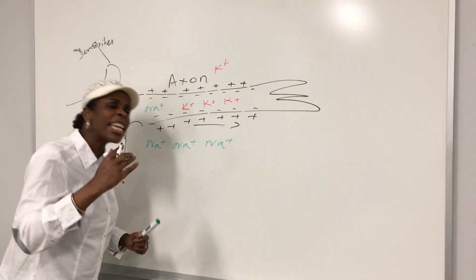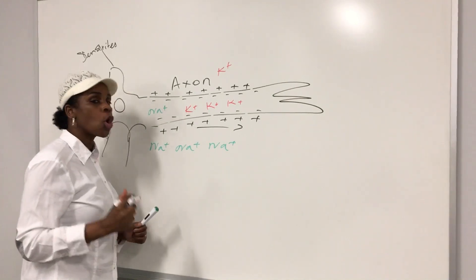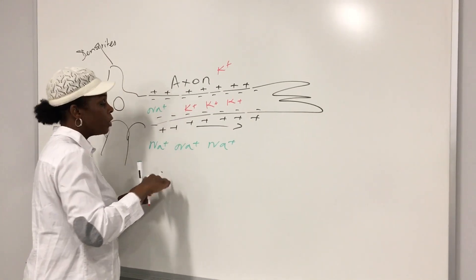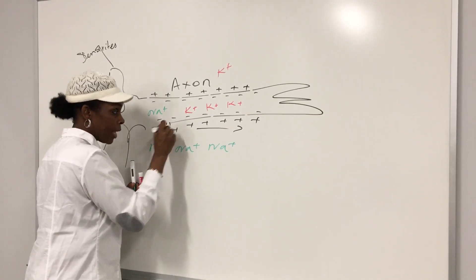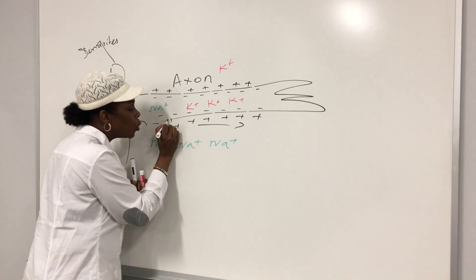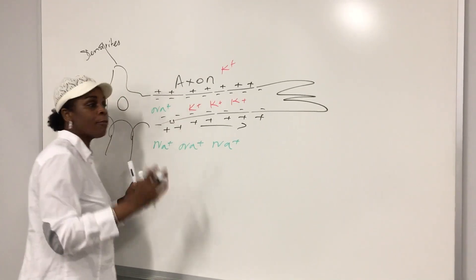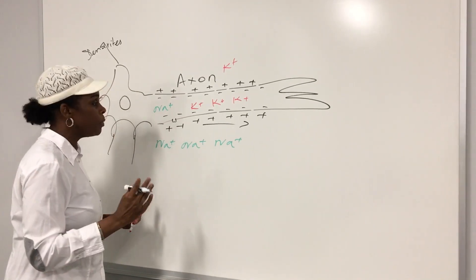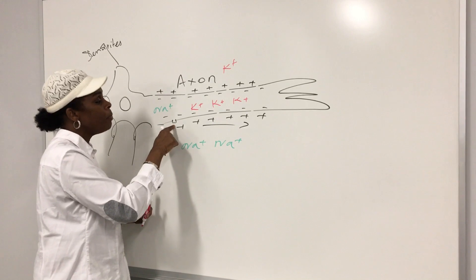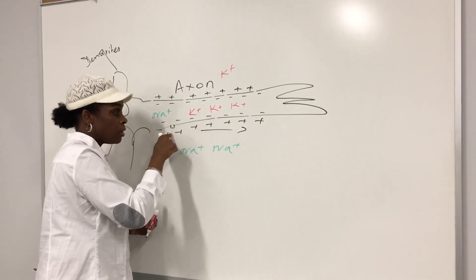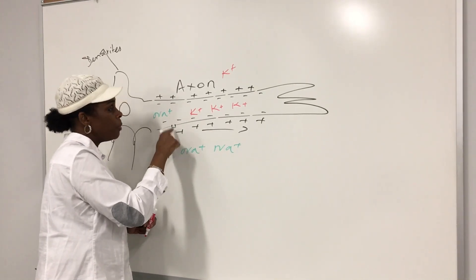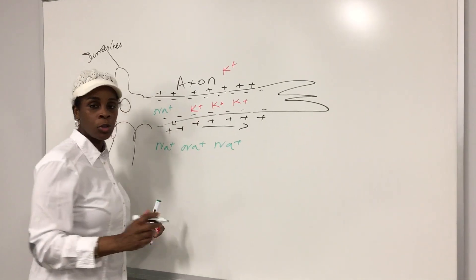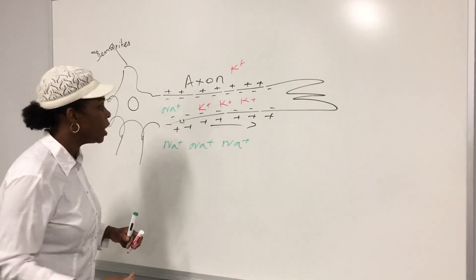We have a second type of channel called a gated channel. Those channels have open and close door gates. We call them sodium gated channel and potassium gated channel — they have a gate, they can close and open.